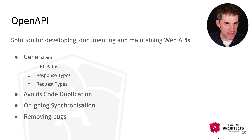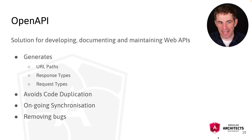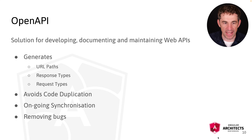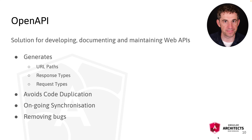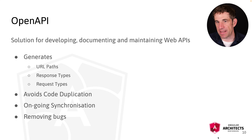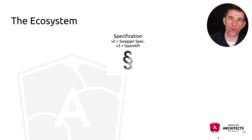We have an ongoing synchronization as long as we keep the code generator running and up to date. And of course the main reason we're doing this is that we want to avoid bugs. OpenAPI in its core is a specification.